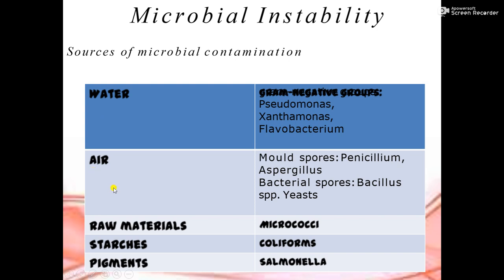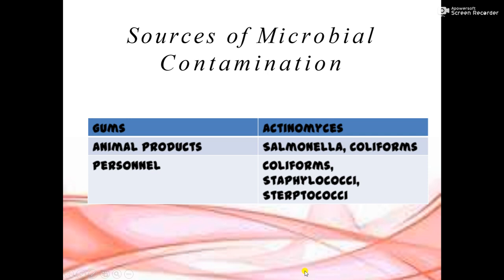Another source of microbial contamination is air. Air mould spores include Penicillium, Aspergillus, bacterial spores, Bacillus species, and yeast. Raw materials such as Micrococci and starches which contain coliform-type microbial species, and pigments like Salmonella. Gums also contain Actinomyces.